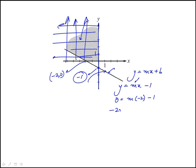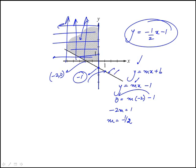So that means minus 2m is 1. I just moved that over, which means m is minus half. So the equation is y equals minus half x minus 1. That's the equation of this line.